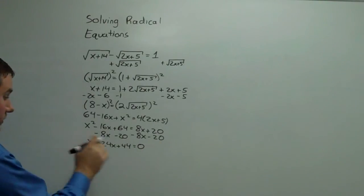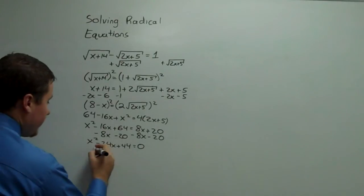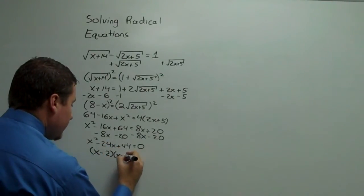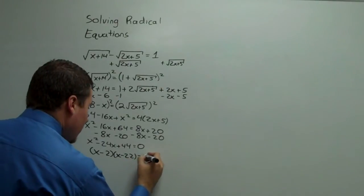It's at this point that we come up with factors of 44 that add to negative 24, and they're actually pretty obvious. 2 and 22 should do it. So x minus 2, x minus 22 equals 0.